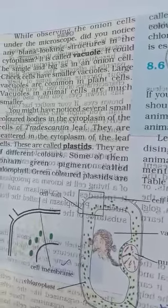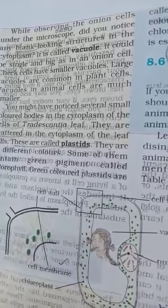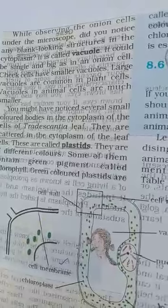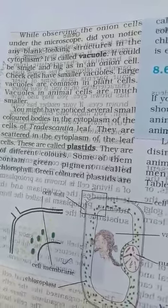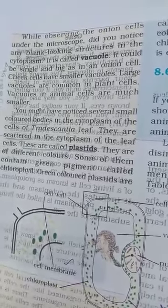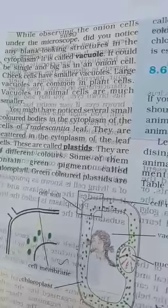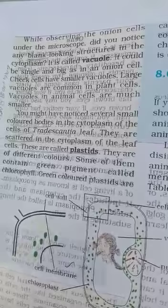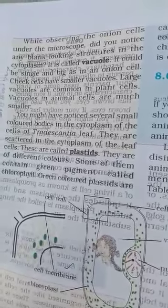The size of vacuoles differs between plant cells and animal cells. Plant cells have large vacuoles, while animal cells have much smaller vacuoles. Large vacuoles are common in plant cells.